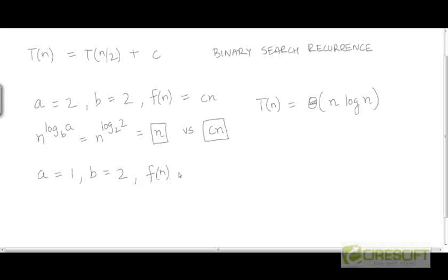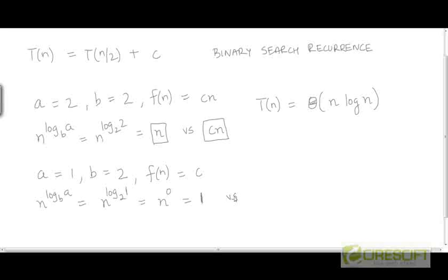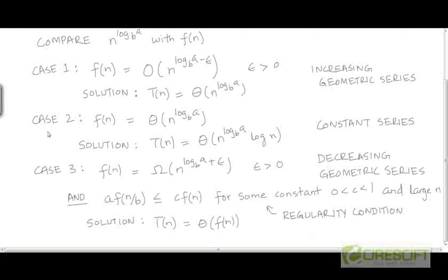The amount of work done in partitioning the problem and combining the result is a constant. So n^(log_b a) = n^(log_2 1) = n^0 = 1. Comparing this constant function with f(n), which is also a constant, both functions have the same rate of growth, so we are again in Case 2 of Master Theorem.